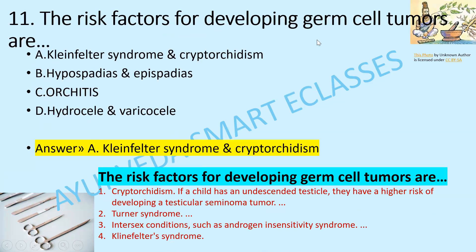The risk factors for developing germ cell tumors are: Klinefelter syndrome, cryptorchidism, hypospadias, epispadias, or orchitis/hydrocele/varicocele? The answer is option A — Klinefelter syndrome and cryptorchidism. Risk factors for developing germ cell tumors include cryptorchidism, Turner syndrome, intersex conditions such as androgen insensitivity syndrome, and Klinefelter syndrome.